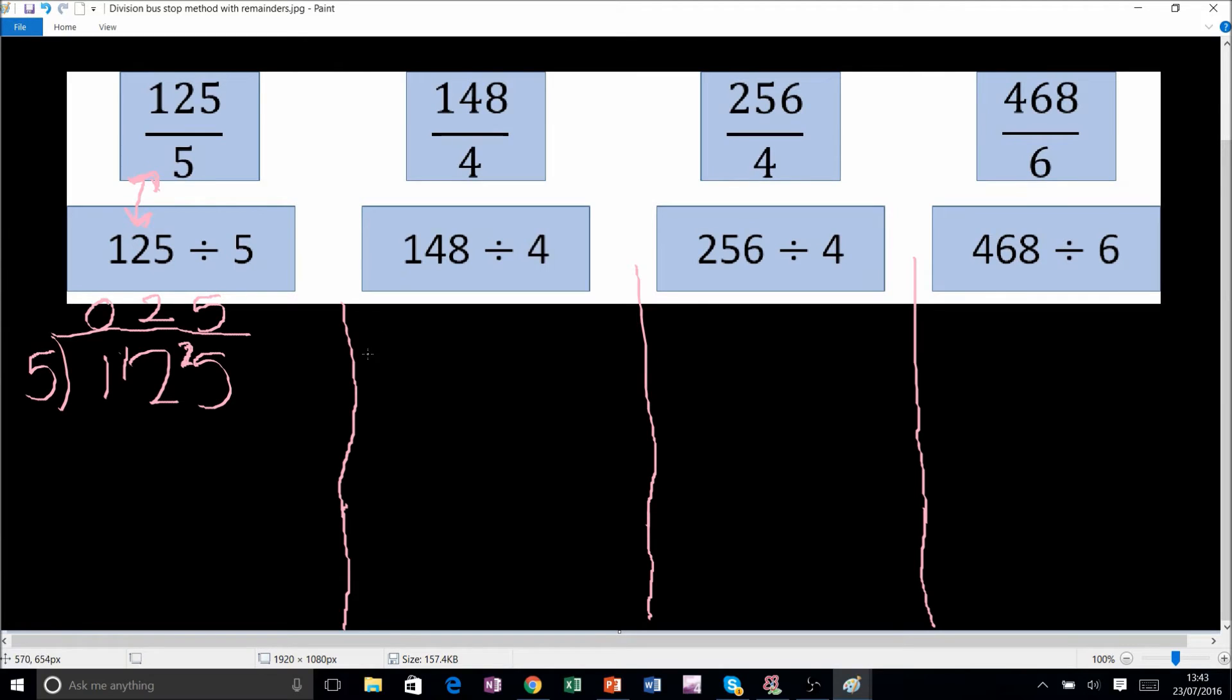Let's jump into the next one. We've got 148 divided by 4. How many fours go into one? Well, zero, remainder one. So the one still remaining goes beside the 4. How many fours go into 14? Well, 4, 8, 12, so we've got three, remainder two. The two goes beside the 8. How many fours go into 28? Well, 4, 8, 12, 16, 20, 24, 28, so we've got seven, remainder zero. So 148 divided by 4 gives us 37.